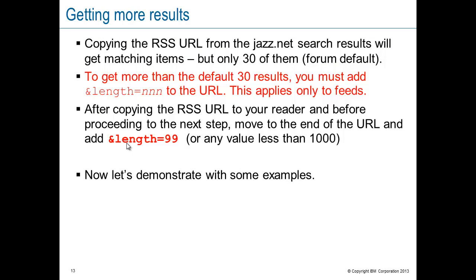One more little piece before we make some real feeds and install them into our readers. The default number of items returned by the jazz.net forum for an advanced search query in an RSS feed is 30. Depending on how tight your query is, maybe that's not enough items. If you want more items, you'll need to add another option to the RSS URL. Adding ampersand length equal to some value less than a thousand will get you up to that many items, depending on how many are available.